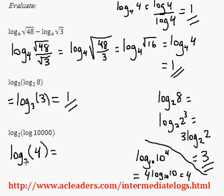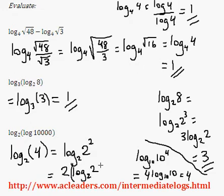Log base 2 of 4. Okay, log base 2 of 4, 4 is 2 squared. Bring the exponent down: 2 log base 2 of 2. Log base 2 of 2 is just 1, 2 times 1 is 2.